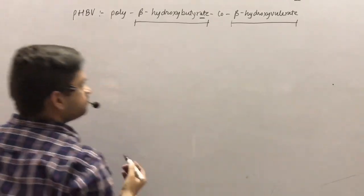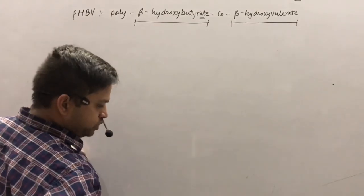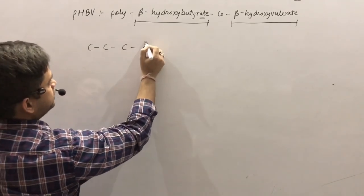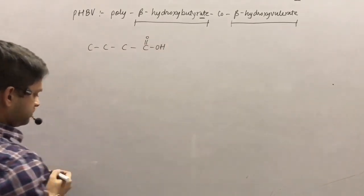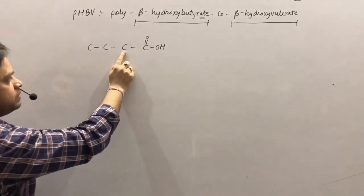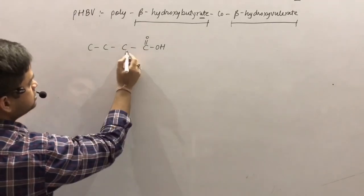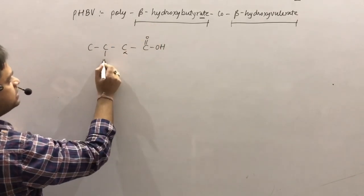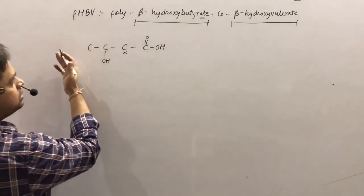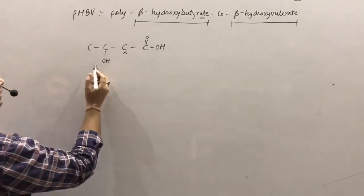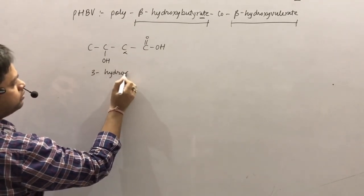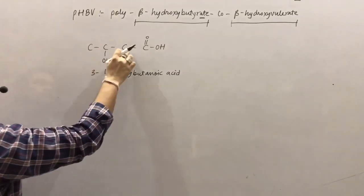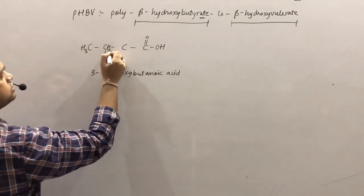Let's start with beta-hydroxybutyric acid. 'Butyr-' indicates 4 carbons: 1, 2, 3, and 4. Carbon 1 is COOH (carboxylic acid), the carbon directly attached to the functional group is the alpha carbon, and the next carbon is the beta carbon. The beta carbon has a hydroxyl group (OH). This is beta-hydroxybutyric acid, or 3-hydroxybutyric acid. Fulfilling the valencies: carbon 4 is CH3 and carbon 3 is CH with OH, carbon 2 is CH2.